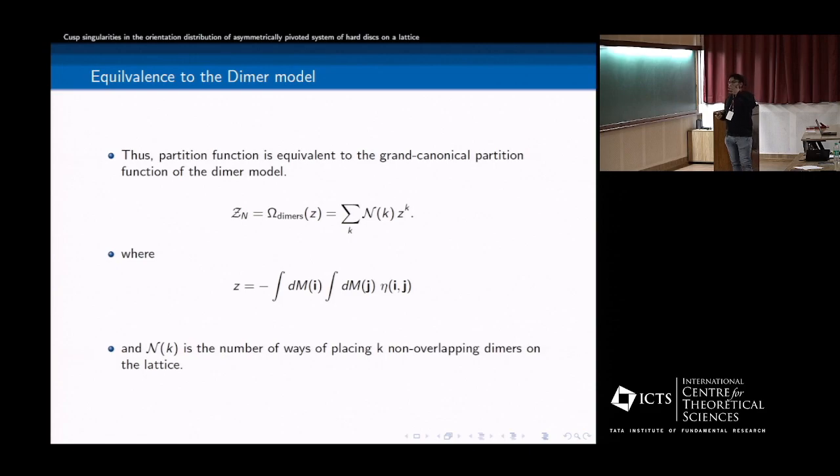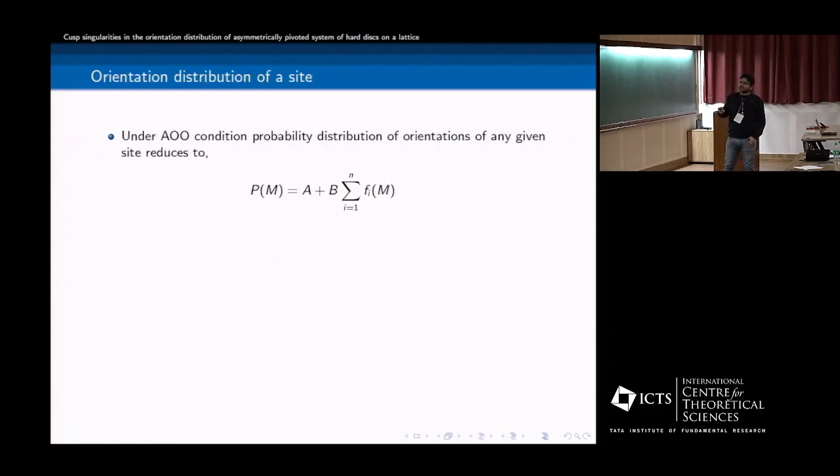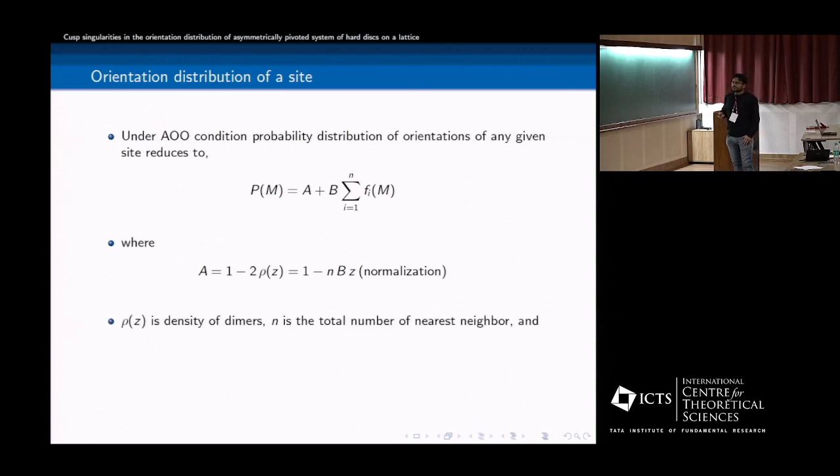So what can we extract from this mapping? So one thing we can extract is probability distribution orientation of any site. So for example, it can be written as a contribution of two, so one is when there is no dimer. It's a constant, it's independent of the orientation. And the other part is where there is a dimer there. And for example, A is nothing but the probability there is no dimer is one minus two rho. Rho is nothing but the density of the dimers. And this is nothing but this. Because of normalization, they are connected, so they are not independent A and B. So n is a total number of nearest neighbor and rho is density of dimers. And F is you can exactly calculate using eta. So eta is also known from the model.